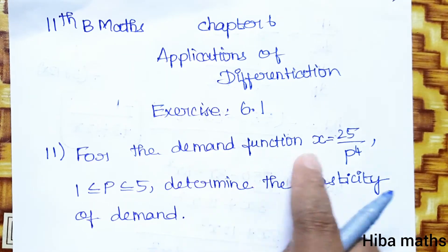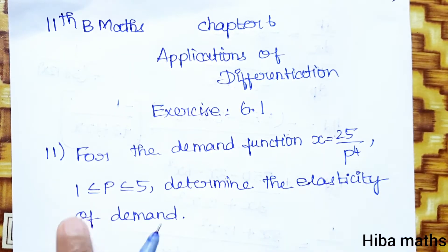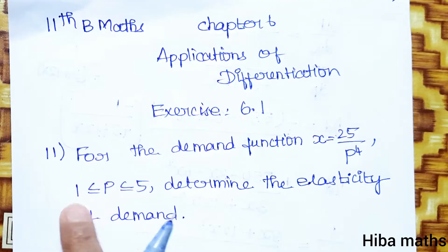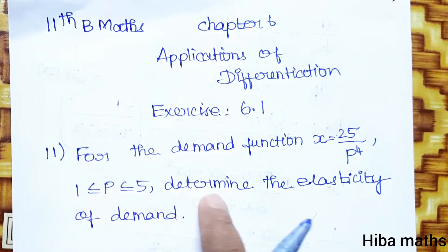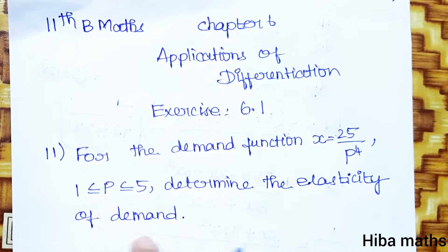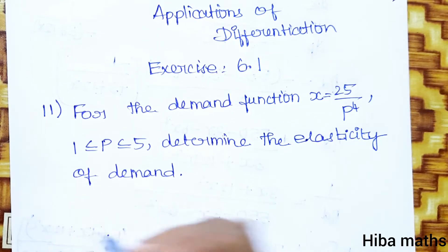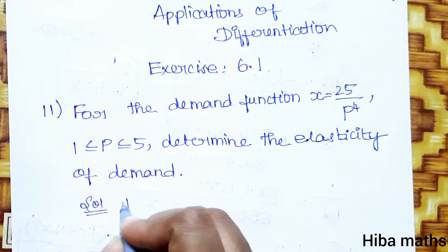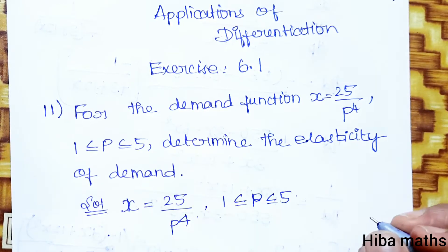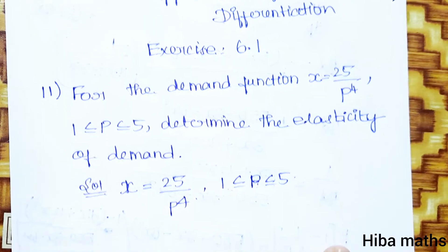For the demand function, x is equal to 25 divided by p to the power 4, where p is greater than or equal to 1 and less than or equal to 5. Determine the elasticity of demand.